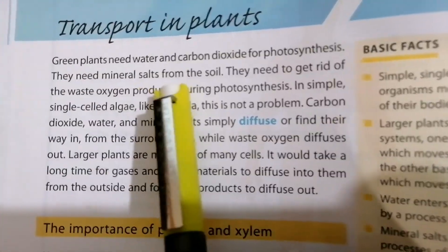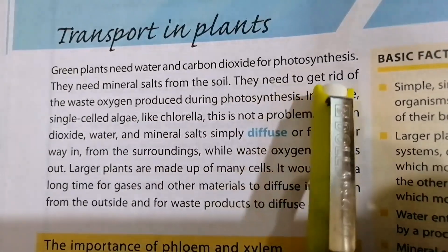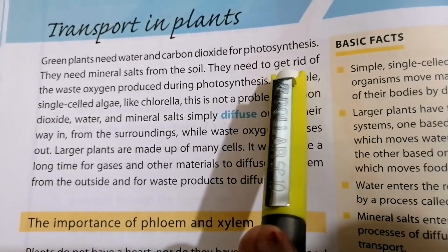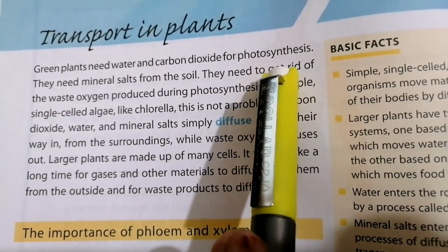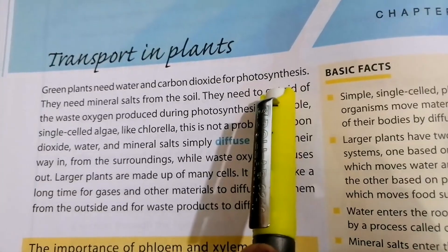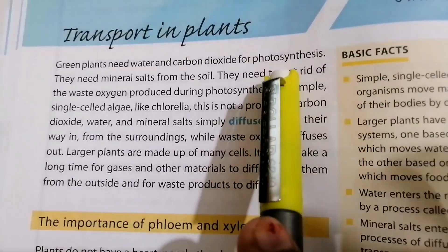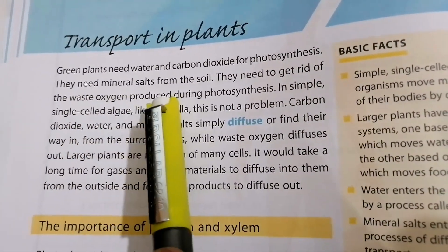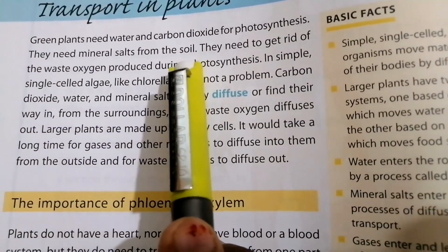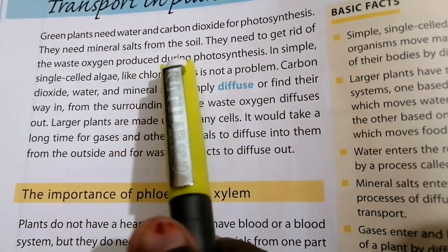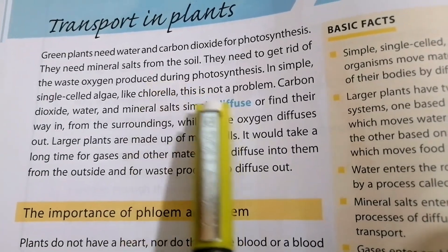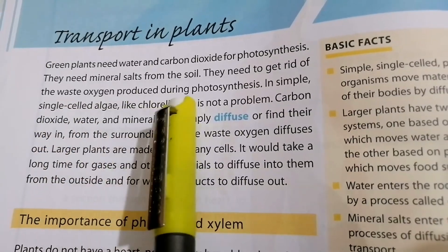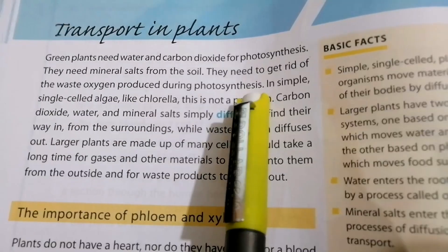Green plants need water and carbon dioxide for photosynthesis. In the previous class we read about photosynthesis — it is the process of making food in plants in the presence of water, carbon dioxide, and the heat of the sun. Plants also need mineral salts from the soil, and they need to get rid of the waste oxygen produced during photosynthesis.